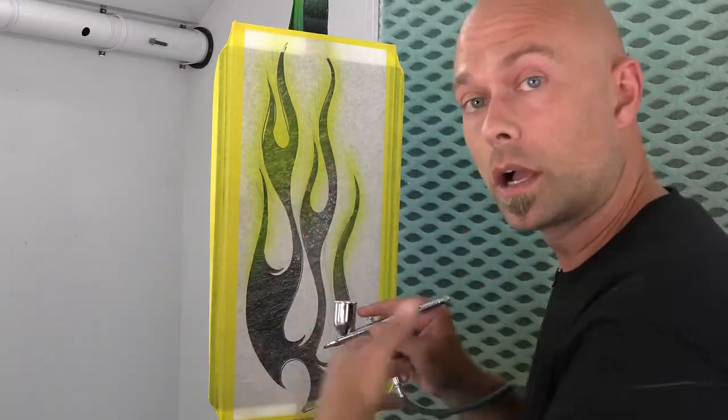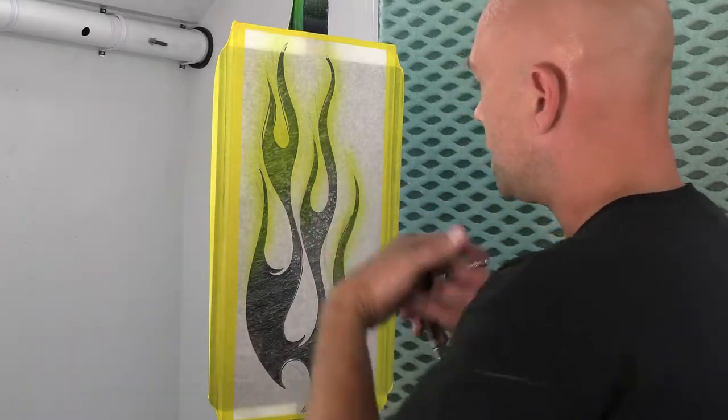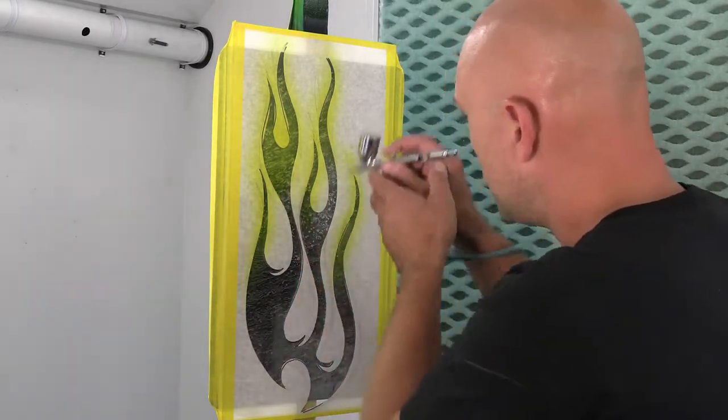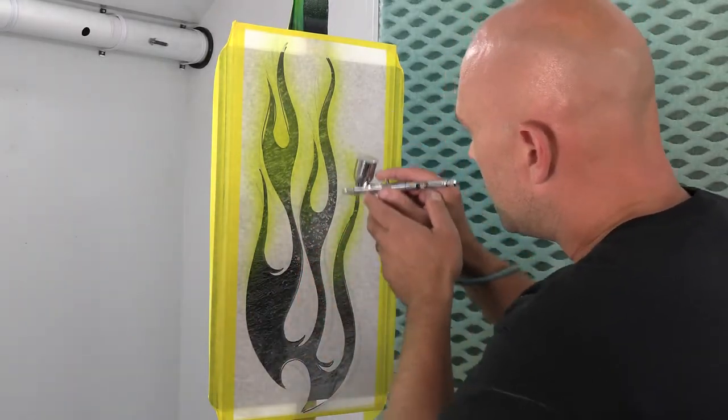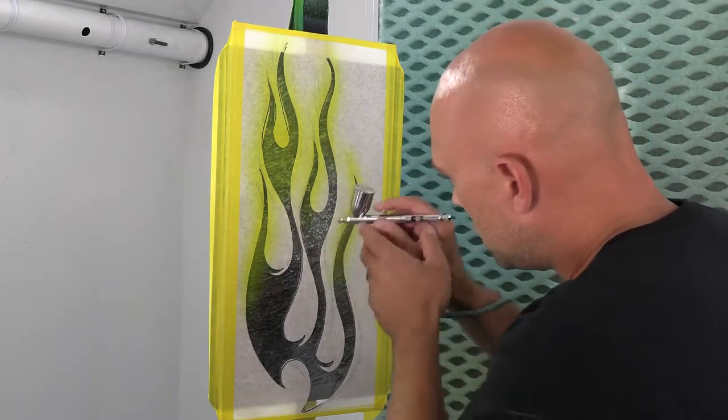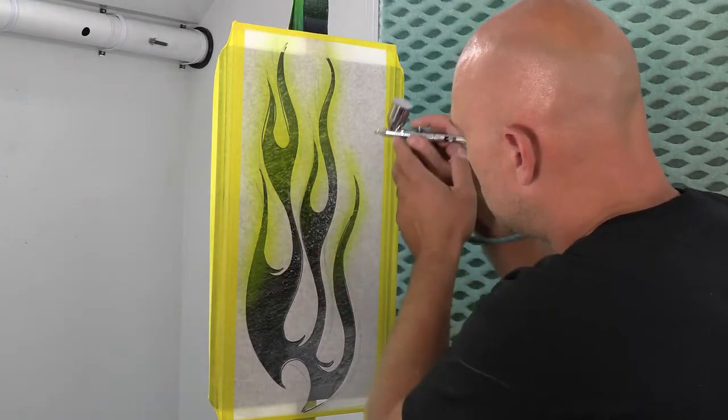You're better off building up your color in light coats than really trying to hammer something on wet and run the risk of it bleeding underneath or seeping or just causing some problems. So light coats, build up your color. That's the beauty part of the transparent color. You can slowly work it, and you can get a really nice vivid color. So I'm going to continue on, getting this where I want it.